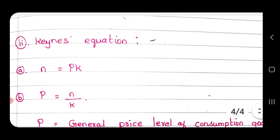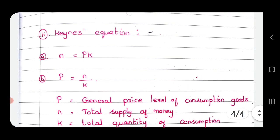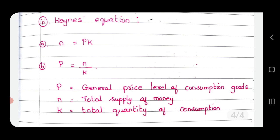Next, King's equation: N is equal to PK. P is equal to N by K. P is general price level of consumption goods. N is total supply of money. K is total quantity of consumption.